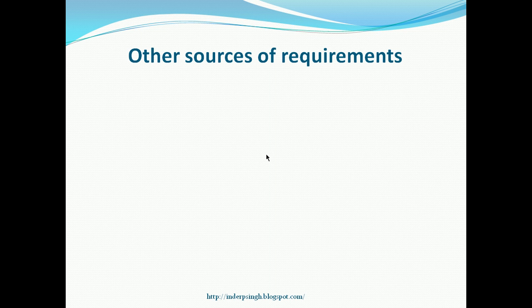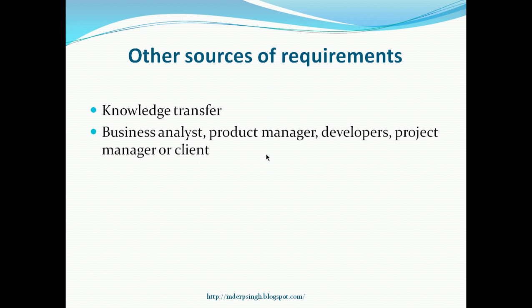Now, sometimes if you are working in a project, it is possible that you do not get any requirements documentation to work with. But still, there are other sources of requirements, and before you start your software development or testing, you need to gather the requirements information from these other sources so that you can base your software or test design on them. First of all, there is knowledge transfer — if you are new to the team, the existing team members may already be aware of what requirements they are working towards implementing in the system. You can also talk to the business analyst, product manager, developers, project manager, or the client to get the main requirements and their details.